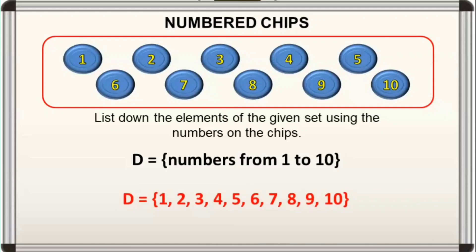If we form a set consisting of the numbers written on the chips, we call it the universal set, while the sets A, B, C, and D that we have formed out from it are its subsets.